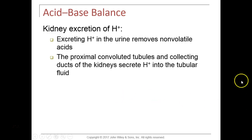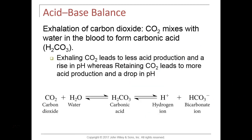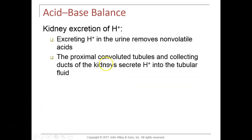In respiratory acidosis, blood pH drops because there is an excess amount of CO2 in the blood, leading to excess production of carbonic acid, which dissociates to release hydrogen and makes the blood more acidic. For instance, if a patient is not breathing or breathing very slowly, they are not exhaling enough CO2. The retained CO2 forces more carbonic acid production, bringing blood pH down — this is respiratory acidosis.